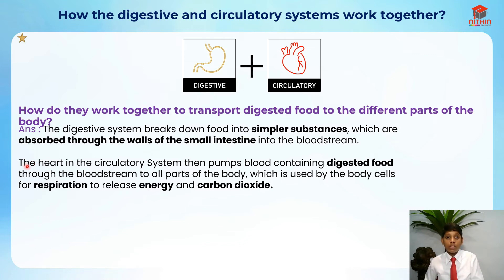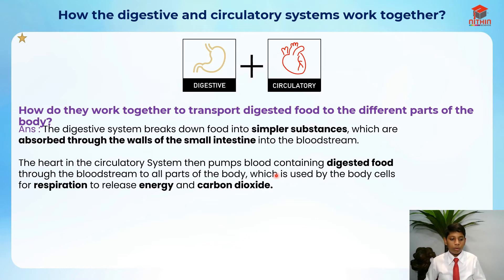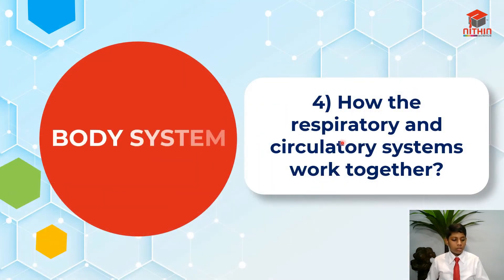Now linking to the circulatory system: the heart in the circulatory system then pumps blood containing digested food through the bloodstream to all parts of the body, which is used by the body cells for respiration to release energy and carbon dioxide. Respiration is very important — it appears in most body systems questions and you need to include it to get the marks.